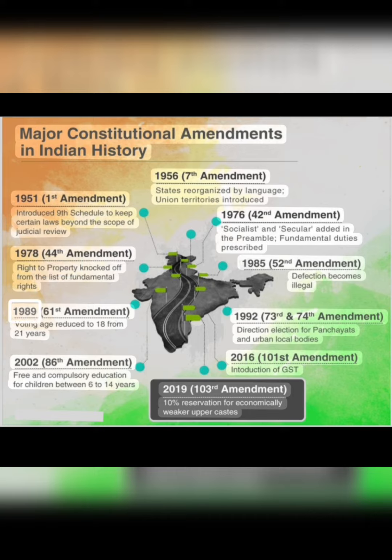1989, 61st Amendment: voting age reduced to 18 from 21 years.